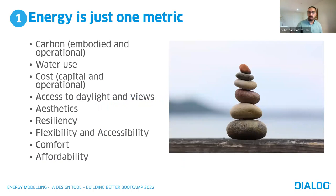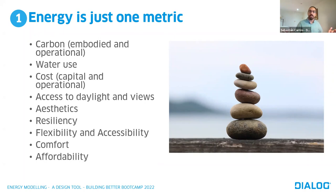I'll start with the first lesson: energy is just one of many metrics. Energy models tend to produce very precise results focused on one metric, and we should not be designing for energy as the end-all, be-all. It's really important in high-performance or integrated design that we account for all metrics — carbon, cost, access to daylighting, aesthetics, resiliency, flexibility, affordability in residential markets. Energy modeling plays a role in providing one of the lenses, but there are many lenses we need to evaluate as we design buildings.